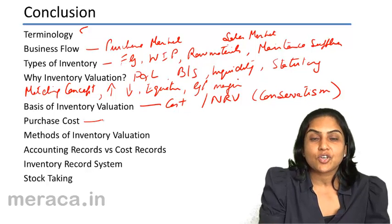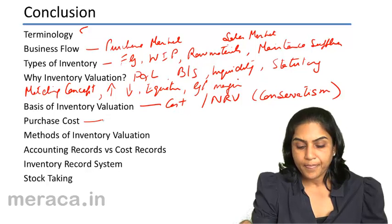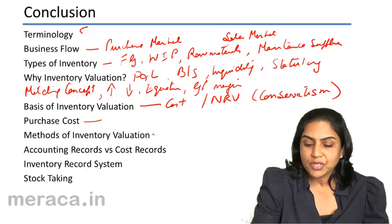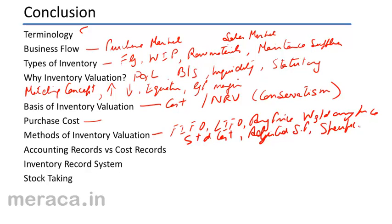We also discussed the components of a purchase cost — what is included and what is excluded when we arrive at a purchase cost. Then we covered the different methods of inventory valuation: FIFO, LIFO, average price, weighted average price, standard cost, adjusted selling price, and also specific identification cost. The FIFO and weighted average cost methods are the most accepted and most commonly used. LIFO and average price method are not allowed by the accounting standards.